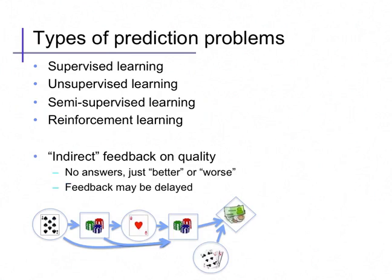Finally, reinforcement learning involves learning when there is only indirect feedback on quality. Rather than actually knowing the correct answer or what a human would have done, as in supervised learning, here we only get a relative quality score, telling us whether we are doing better or worse. Moreover, this feedback might be delayed, it might reflect many actions or predictions in sequence, and it might be noisy. As a simple example, consider the game of poker. In poker, we take a sequence of actions — betting, raising — but at the end we don't even find out the correct answer to those actions; we just find out whether we won or lost. Much of robotics and other kinds of sequential action planning rely on reinforcement learning techniques for developing their behaviors.